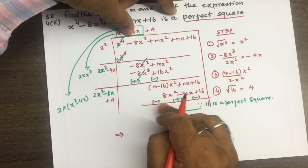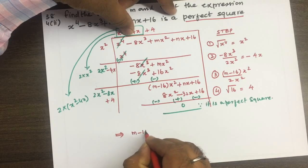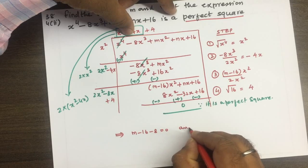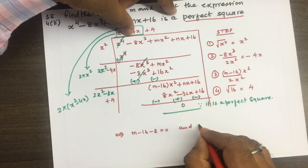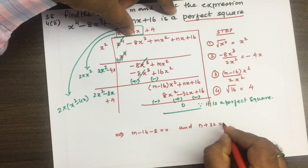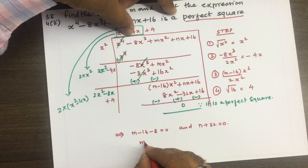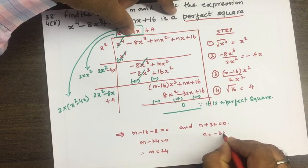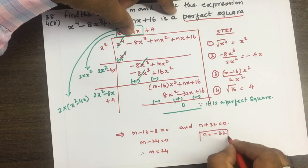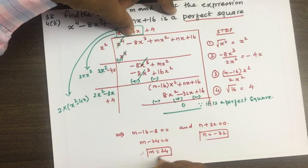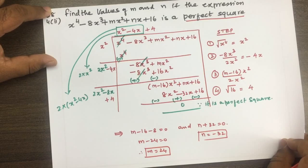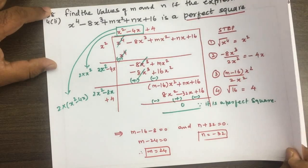M का value find करने के लिए: m minus 16 minus 8 equal to 0 होगा। और n plus 32 equal to 0 होगा। So m minus 24 equal to 0, therefore m equal to 24। And n plus 32 equal to 0, so n equal to minus 32। इस प्रकार से हम लोग m और n का value find कर लेंगे।